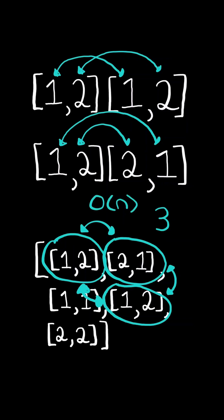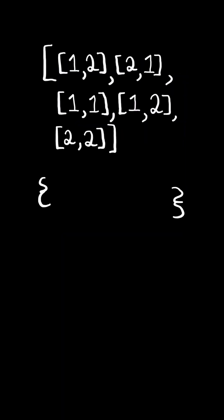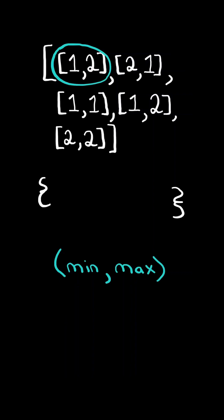We will solve this in O(n) time. First, we will initialize a dictionary to keep track of the number of equivalent dominoes. We iterate through the list, and we will create a tuple with the minimum value first and the maximum value second. The key in the dictionary will be a tuple with the minimum value one and the maximum value two, and the value will be the frequency.